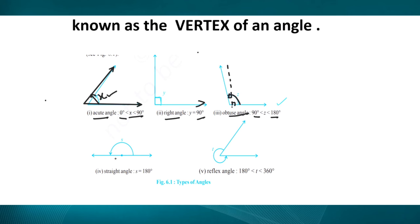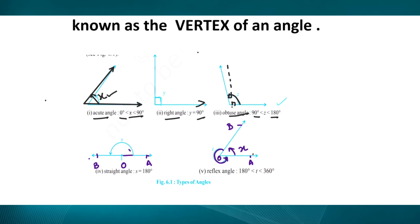यह angle, दो arms हैं OA and OB। BOA एक straight line है, that is why it is known as straight angle। Straight line से बना हुआ है और इसका measure होता है 180 degree, and 180 means twice of 90 degree। And then there is reflex angle - यह जो measure angle है, this is known as reflex angle of angle AOB। Reflex angle which is greater than 180 but less than 360। तो ये types of angles हुए।